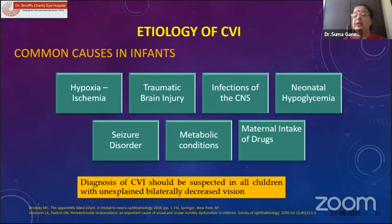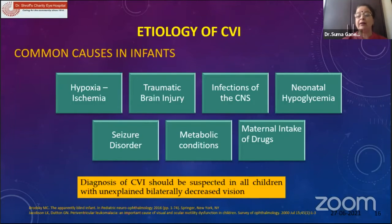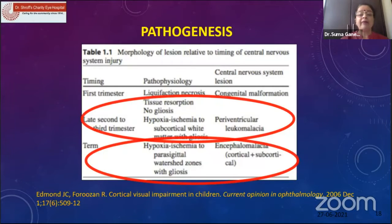Regarding etiology, we need to ask the birth history of the parents — whether there was hypoxia, brain damage, infections, hypoglycemia, or seizure disorders, which we found were more common in India. We suspect CVI in all children with unexplained bilaterally decreased vision, and other acquired causes such as head injury, cardiac arrest, focal infection, epilepsy, or encephalitis. When affected in the late second to third trimester due to hypoxia or ischemia, it causes periventricular leukomalacia, and at term it causes encephalomalacia.